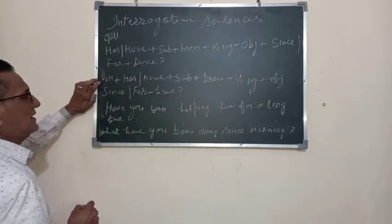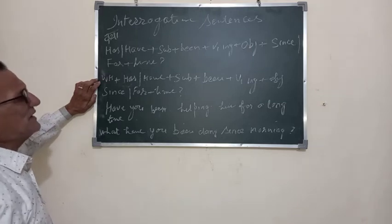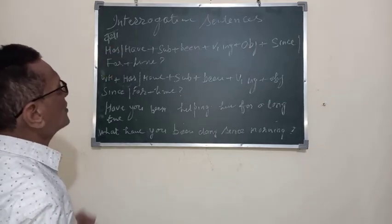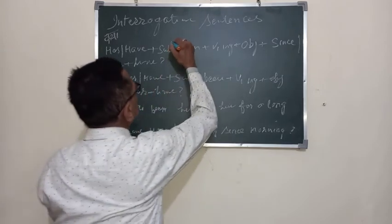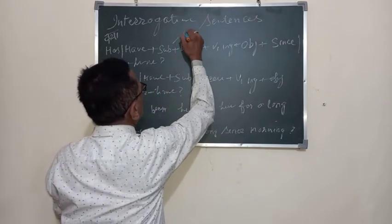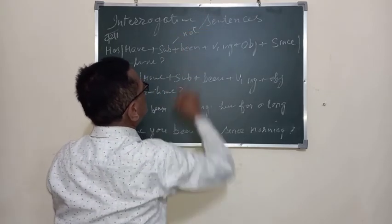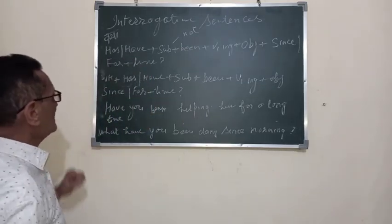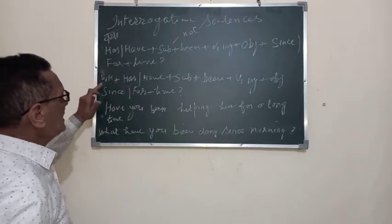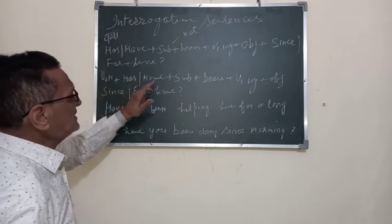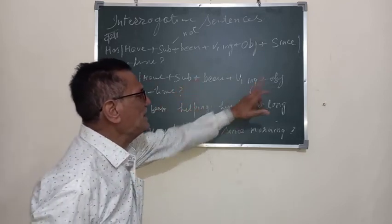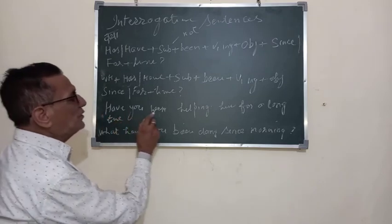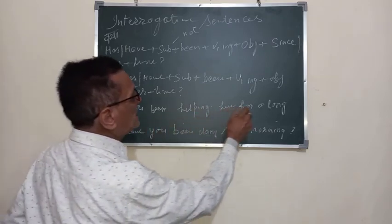If the sentences are negative, you can use 'hasn't' or 'haven't' in short form, or you can place 'not' after the subject. In the same way for wh-family questions: hasn't/haven't + subject + been + verb-ing + object + since/for + time. For example: Have you been helping him for a long time?